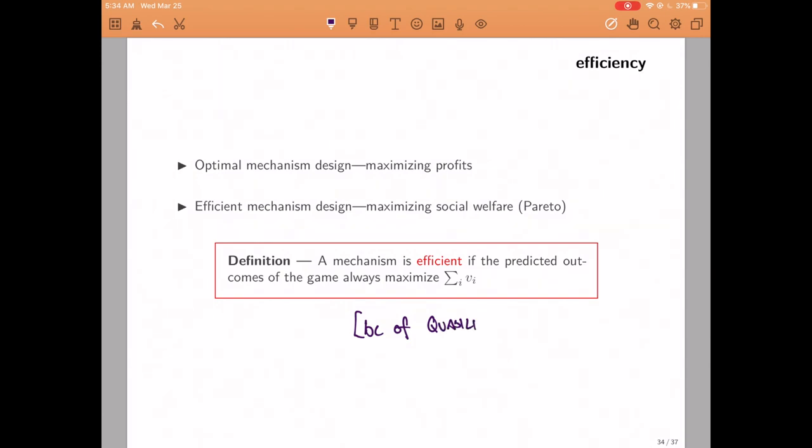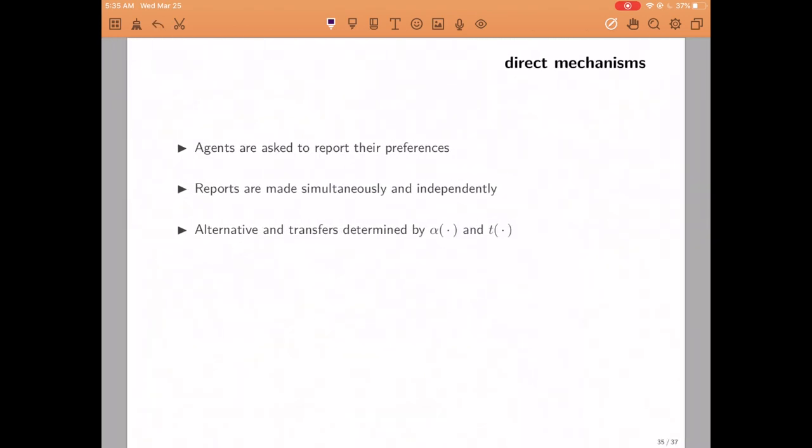Given our assumptions, we're going to be looking for efficient mechanisms, meaning mechanisms for which the predicted outcomes using assumption two always maximize the sum of the values of the individuals. In general, doing mechanism design may look like a daunting task because there are so many different possible mechanisms.